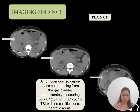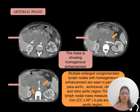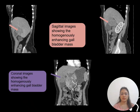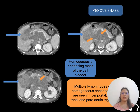After that, on contrast CT, the mass shows homogenous enhancement in the arterial phase, and there are multiple lymph nodes present in the pre-aortic, para-aortic, and peripancreatic regions. In sagittal images, there is also homogenous enhancement of the gallbladder mass. In coronal images, there is likewise homogenous enhancement. In the venous phase, the mass shows homogenous enhancement with lymph nodes in the periportal, renal, and para-aortic regions.